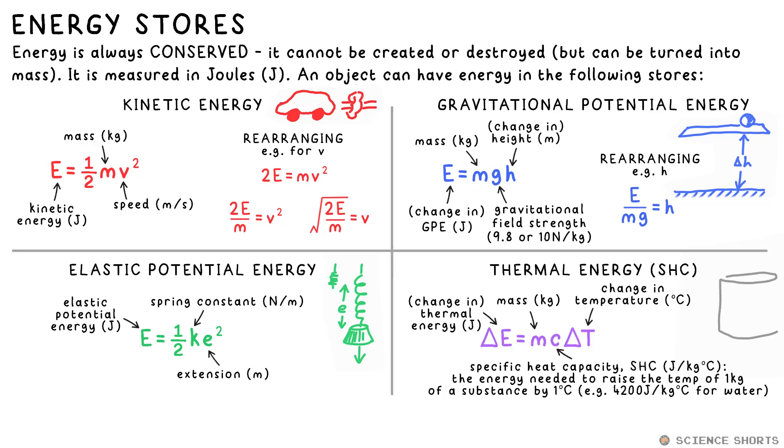Thermal energy, or change in thermal energy, is calculated with the SHC equation. This energy is equal to mass times specific heat capacity times temperature change in degrees Celsius. That's E equals mc delta T. That delta, the triangle, just means change in, so that's change in temperature here.